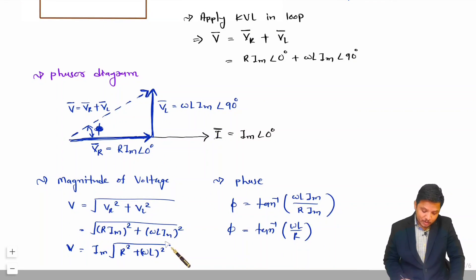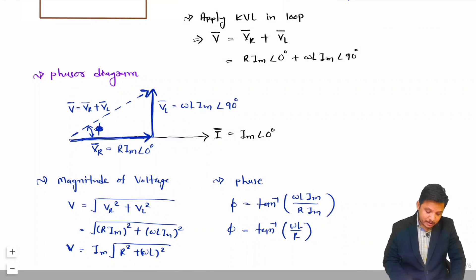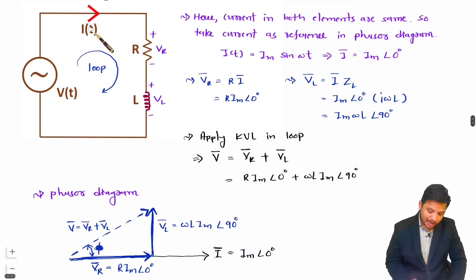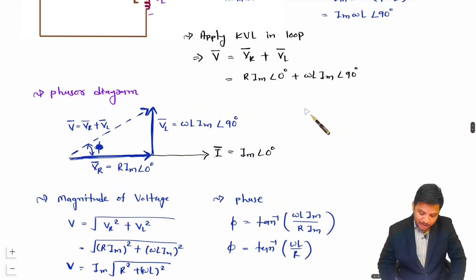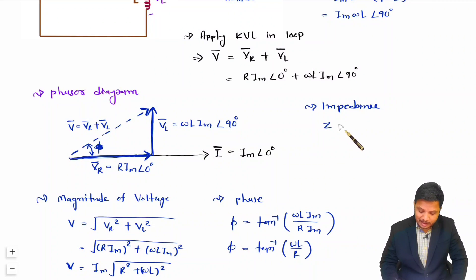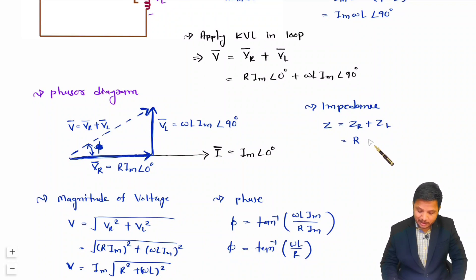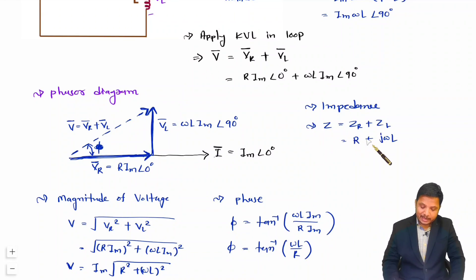One more essential point is impedance. For the series connection, impedance Z = impedance of R + impedance of L. Impedance of R is R and impedance of L is jωL. So Z = R + jωL. That is how we identify the impedance of an RL circuit.